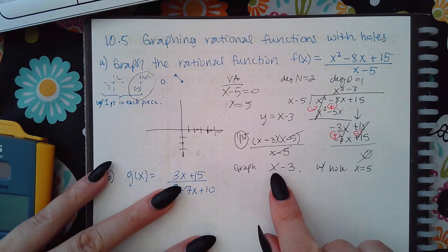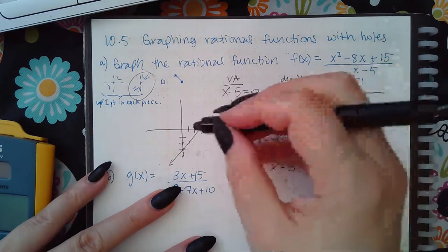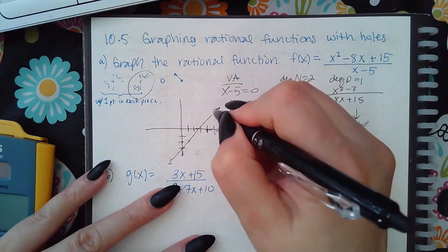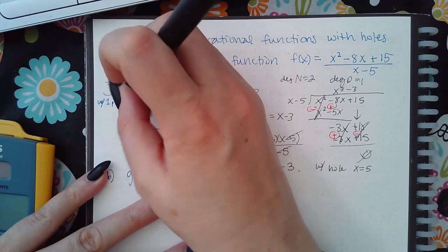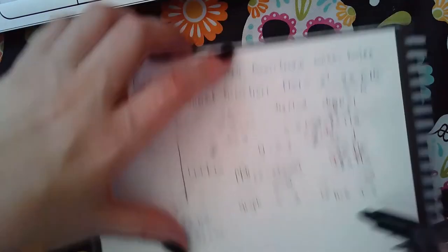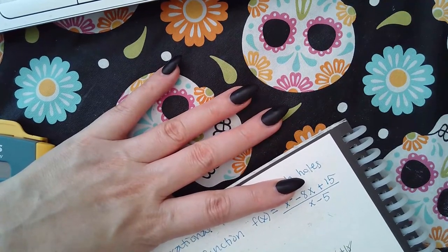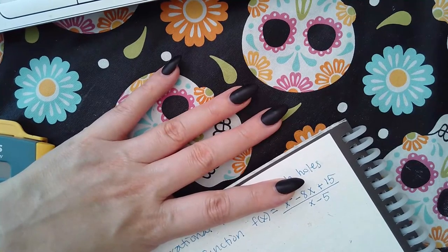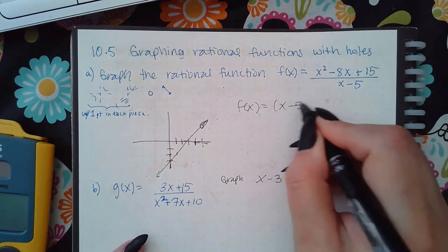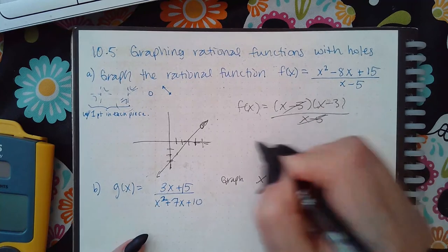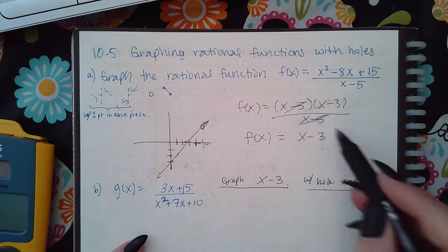Once simplified, I can graph this as a line with a hole where x equals 5 — that's where the cancelled factor equals zero. I just needed to graph that line and place a hole at x equals 5. I did not need to do any of those asymptote steps. The key lesson: take your function, factor it, cancel common factors, then graph it with a hole where the cancelled factor equals zero.